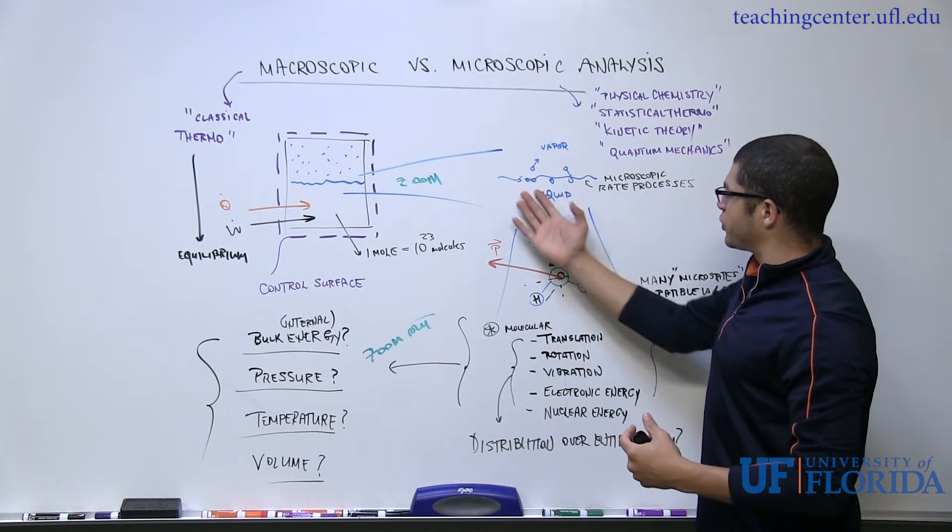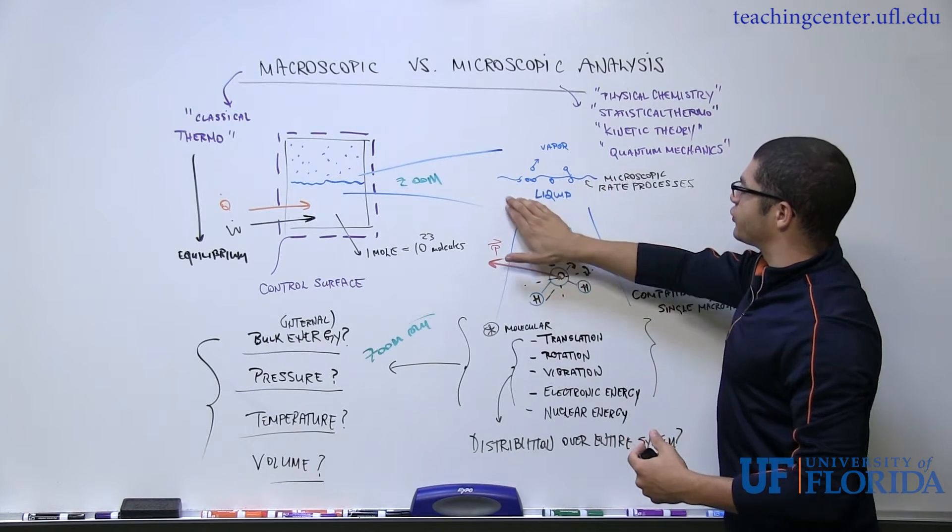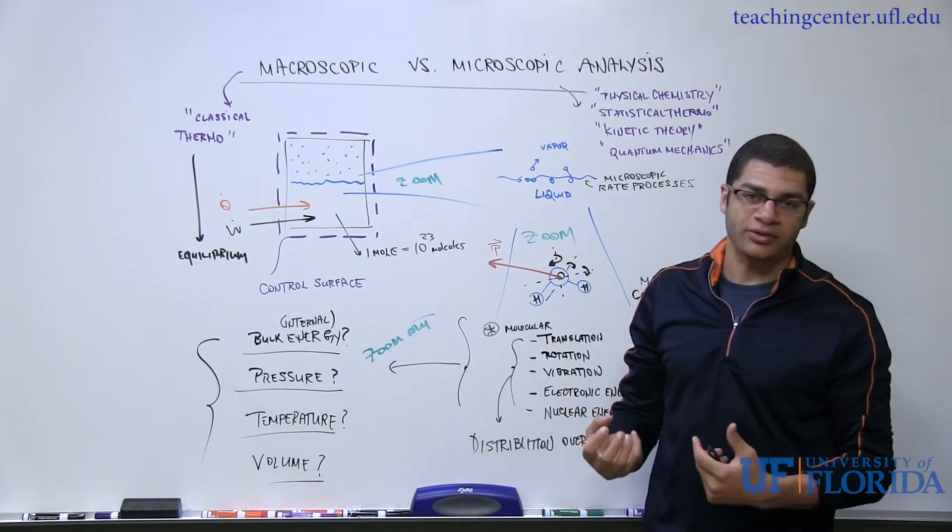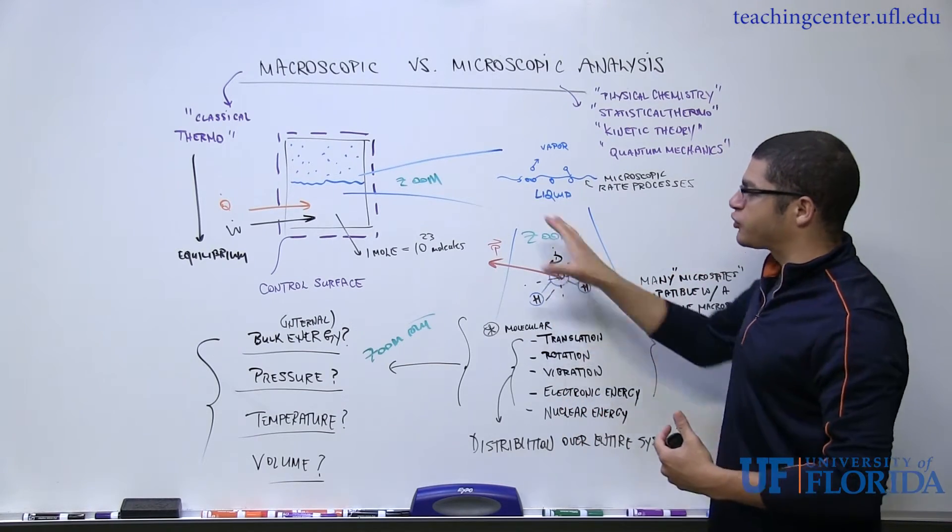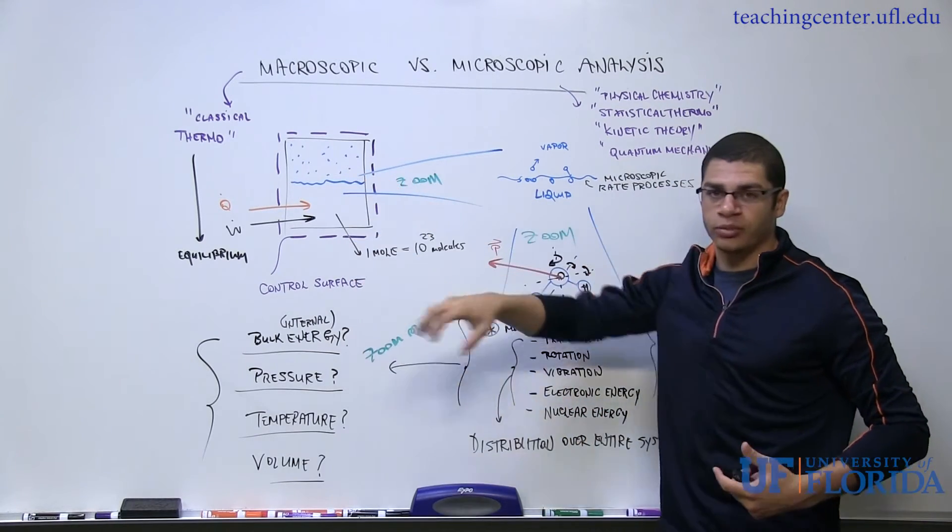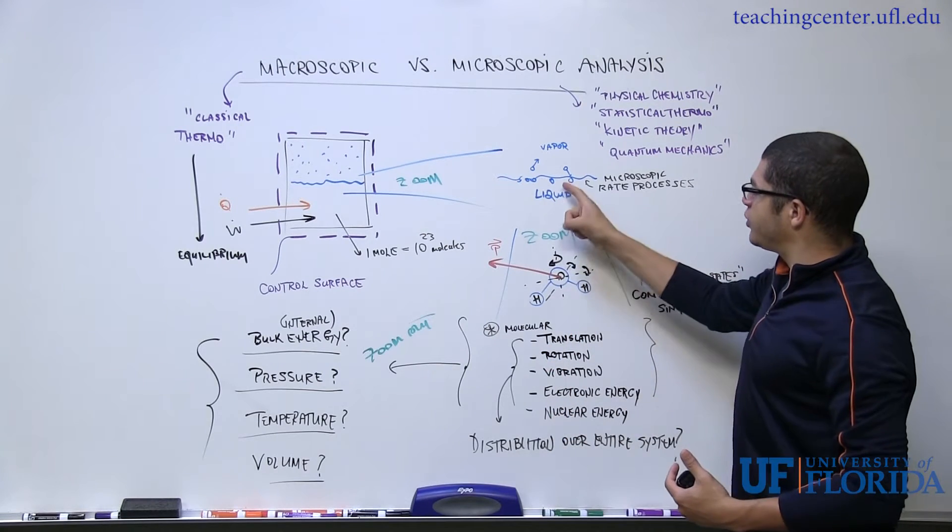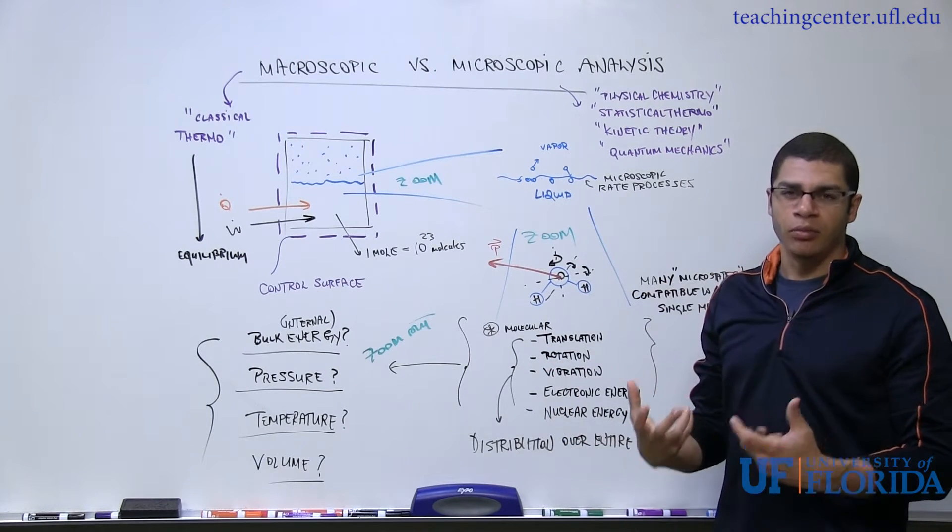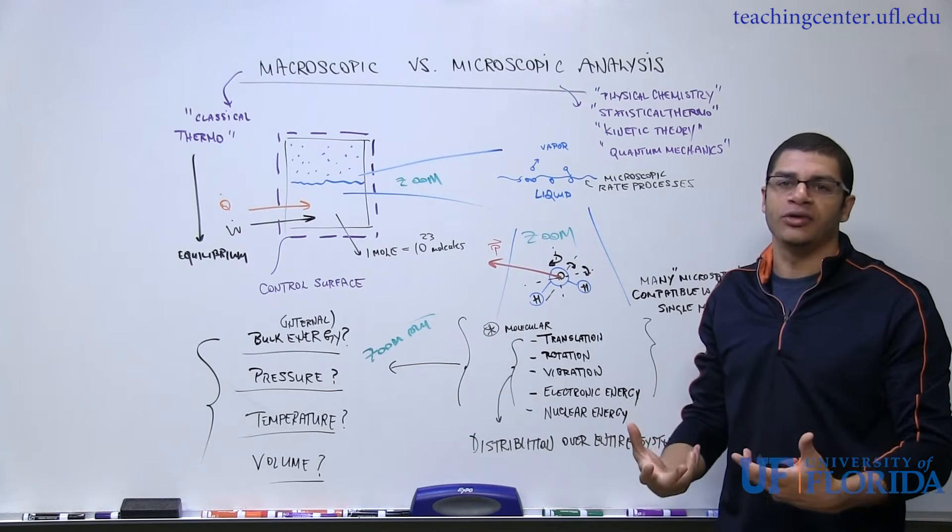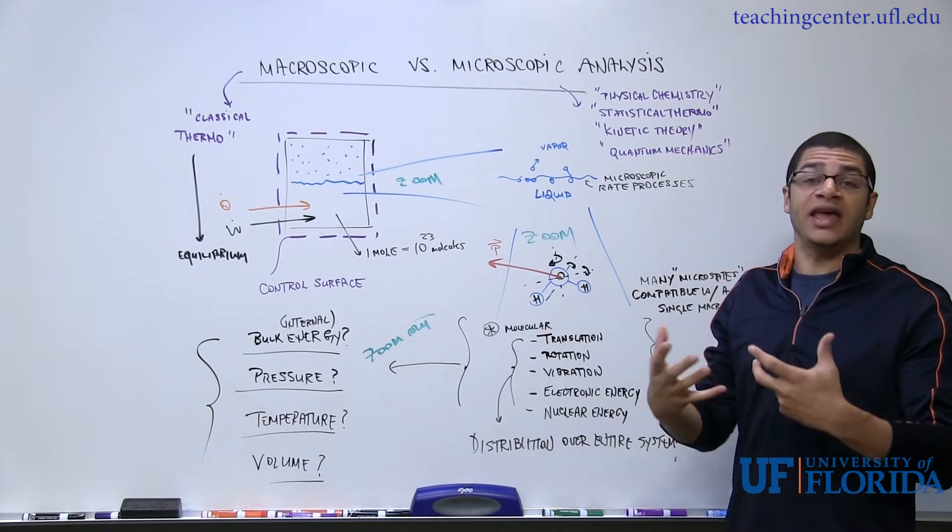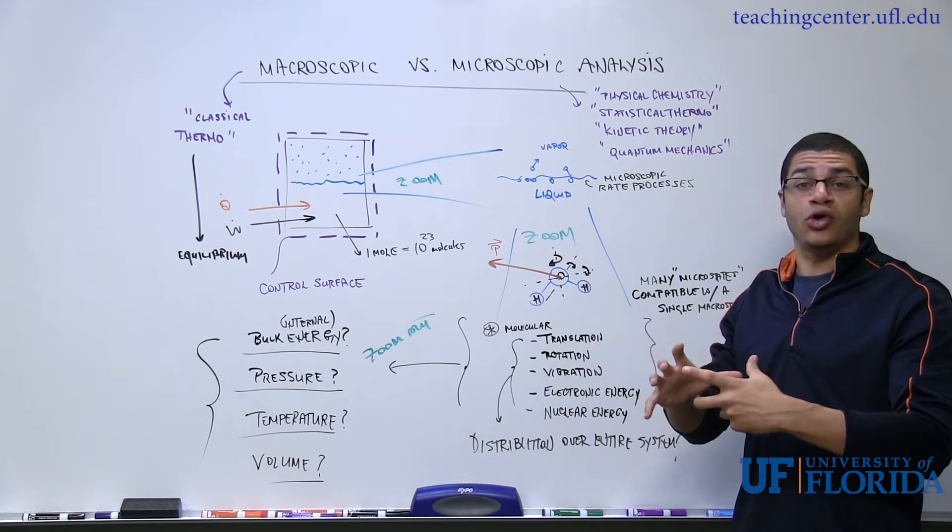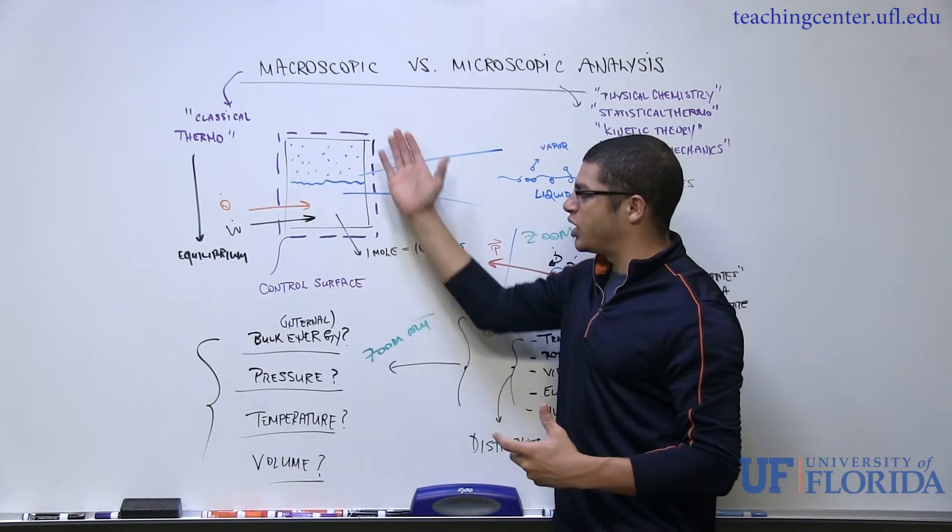If we want to know something about this microscopic rate process or other types of rate processes on this level, not just the fact that they're equivalent to each other, but maybe quantify those rates, then we need to know something about the molecules themselves, how they store energy, and maybe what's the distribution of molecular energy over our entire thermodynamic system.